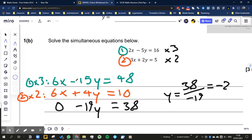So when we multiply the first equation by 3, we have 6x minus 15y is equal to 48. And we multiply the second equation by 2, we end up with 6x plus 4y is equal to 10.